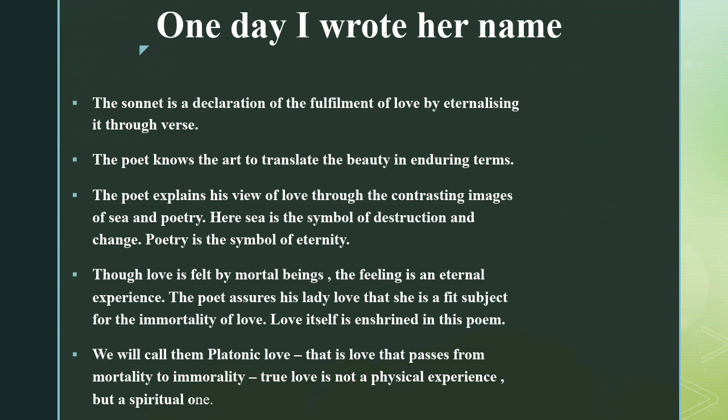The sonnet is a declaration of fulfillment of love by eternizing it through verse. The poet explains his view of love through contrasting images of sea and poetry. The sea is the symbol of destruction and change, while poetry is the symbol of eternity. The love is felt by mortal beings, but the feeling itself is an eternal experience.